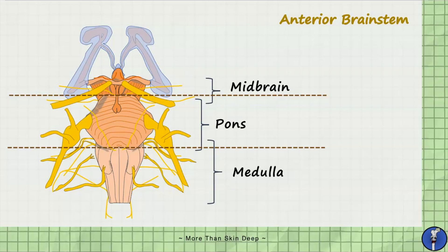Before we go through the cranial nerves which come off the brainstem, it's worth remembering that the first and second cranial nerves — the olfactory and optic nerves — do not come off the brainstem and instead originate from the cerebrum.